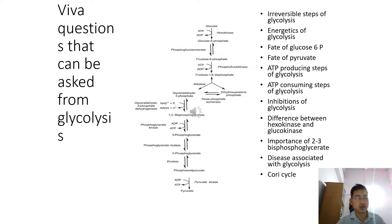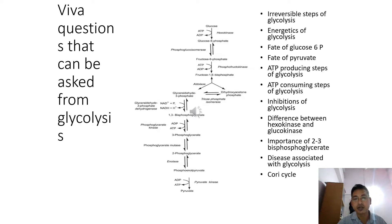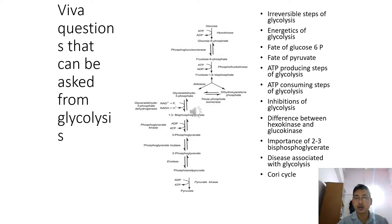Then the fate of glucose-6-phosphate. What are the different fates of glucose-6-phosphate? Glucose-6-phosphate is at a branch point, so it can form many other compounds. It can undergo glycolysis to get converted to 2 molecules of pyruvate. Or it can go to the HMP shunt pathway. It can also go to the uronic acid pathway. It can also go to glycogenesis, or glycogenolysis. And it can also form glucose through gluconeogenesis. So these are the different fates of glucose-6-phosphate.